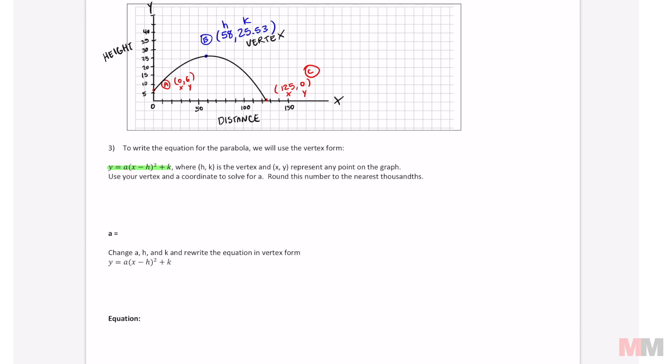In this vertex form, we got y and x, right? And if you look at the graph above, there's two coordinates. You can pick any one of them, but if I were you, I always want to choose the smaller numbers. Those are the ones easier to work with. So if I substitute y and I choose point A, I'm gonna replace y with 6 equals—we said we didn't have an A, so we're gonna leave that as A. Our x is 0 minus h, which is 58, and we're gonna have to square that. Don't forget the little squares. Plus our k was 25.53.